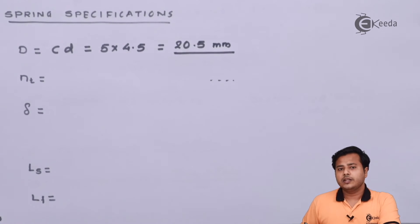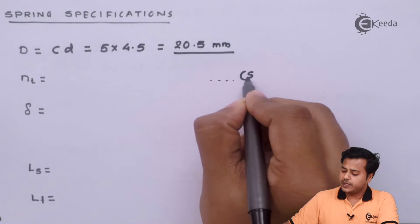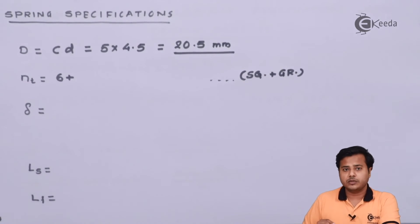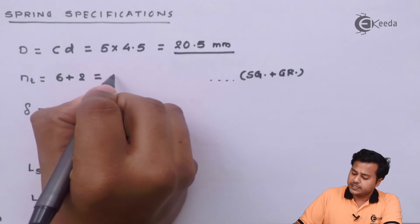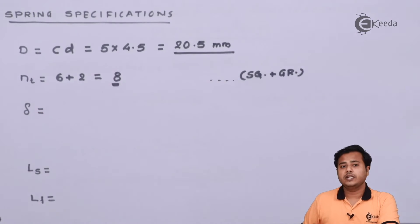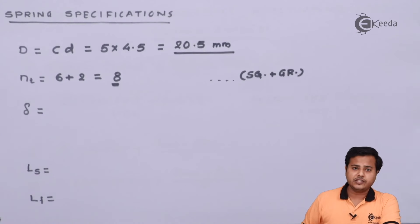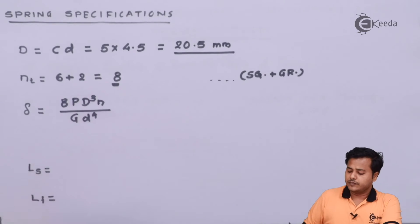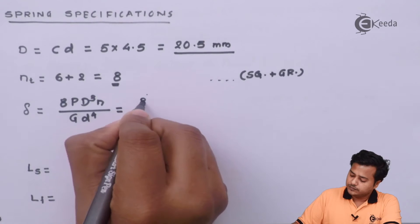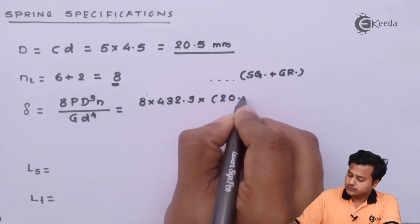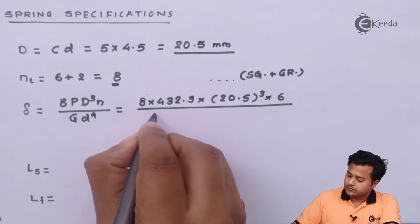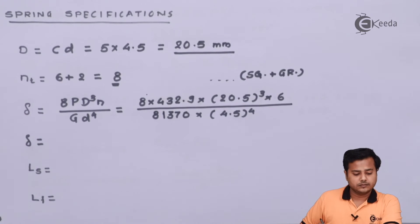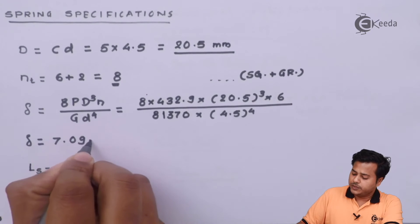The next specification is the total number of coils. Assuming a square-and-ground end condition, the total number of coils will be equal to the active number of coils, which is 6, plus 2, giving us 8 total coils. For deflection, after substituting the values, the actual deflection comes out to be 7.09 millimeters.